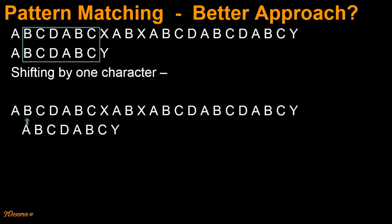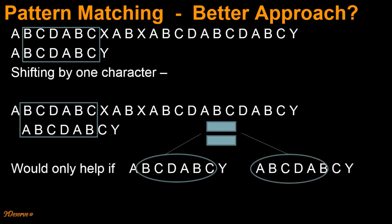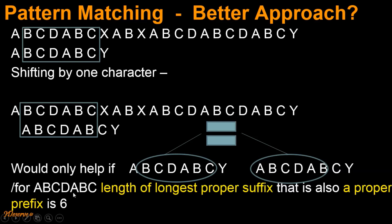Notice that for substring 'abcdabc', the last 6 characters have matched with this portion of the text. What we are trying to do is match the first 6 characters of 'abcdabc' with the same portion of the text that matched with the last 6 characters. We know that last 6 characters 'bcdabc' are not equal to first 6 characters. Therefore, right shifting this pattern by one character is always going to result in a mismatch. In other words, for string 'abcdabc', the length of the longest proper suffix that is also a proper prefix is not 6, so shifting by one character is always going to result in a mismatch.